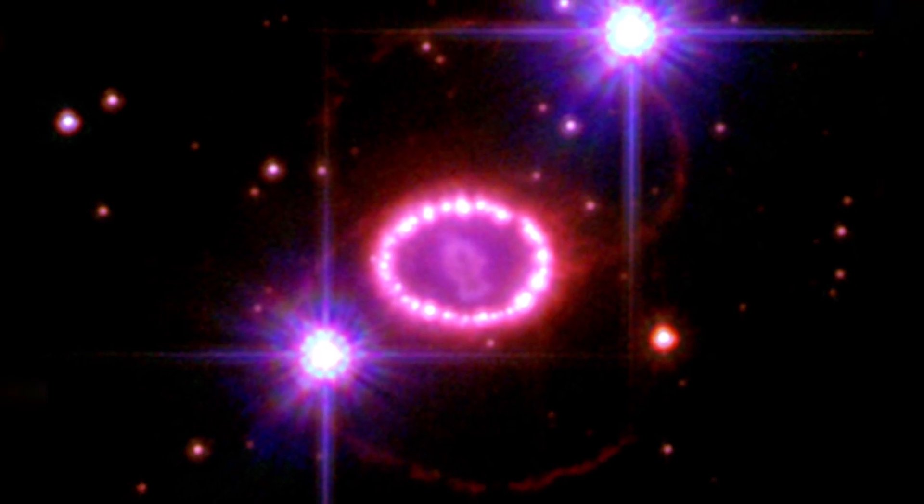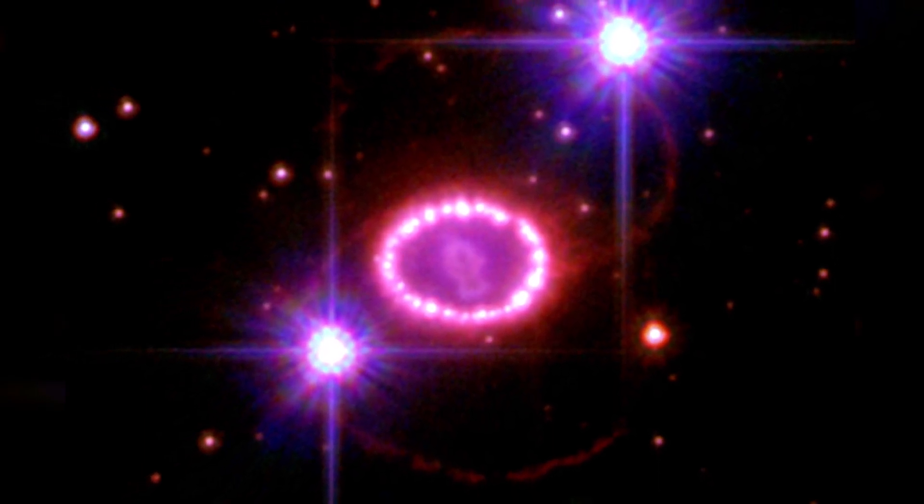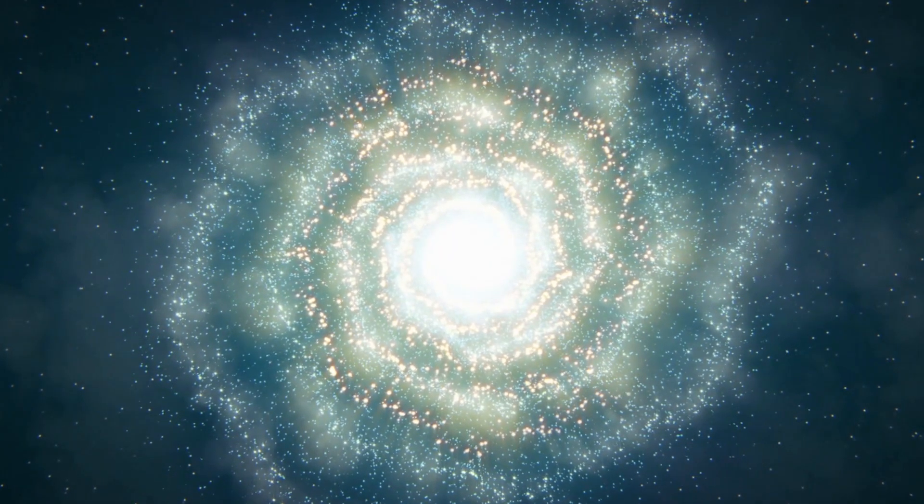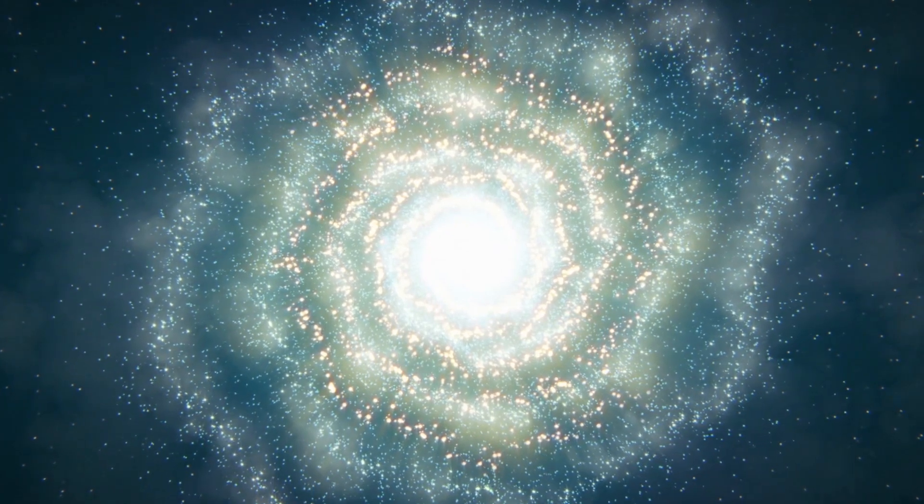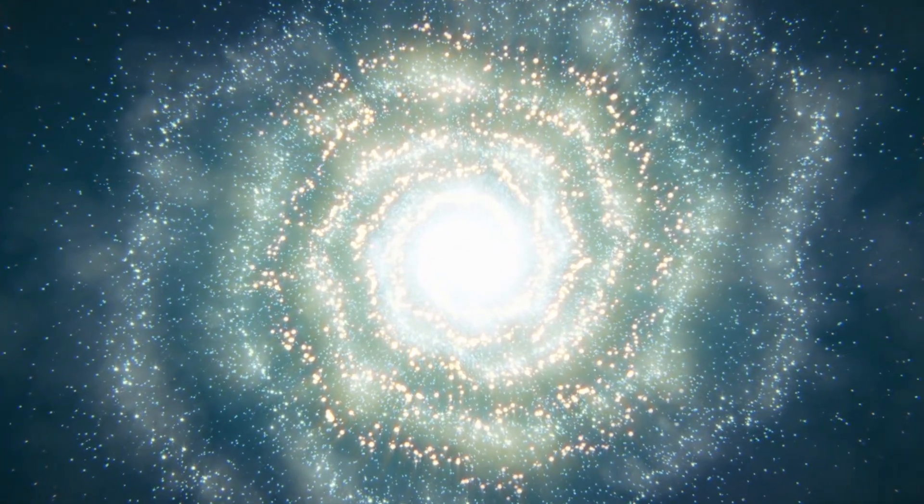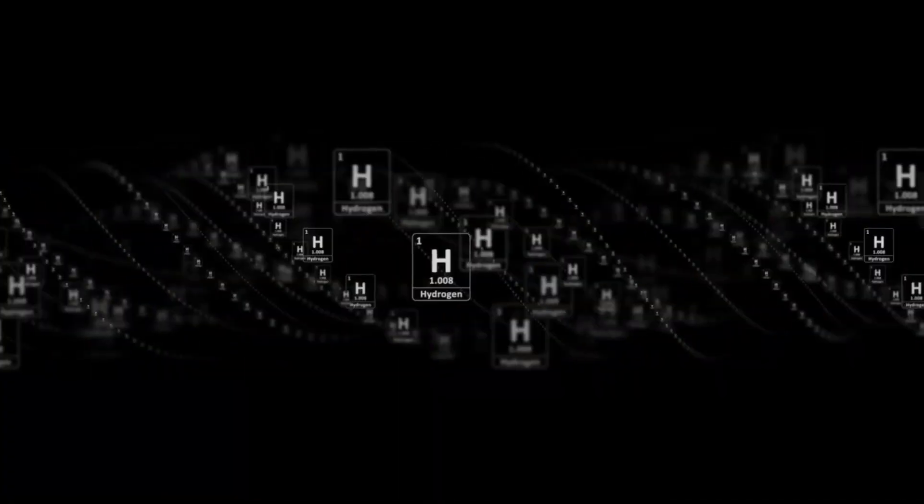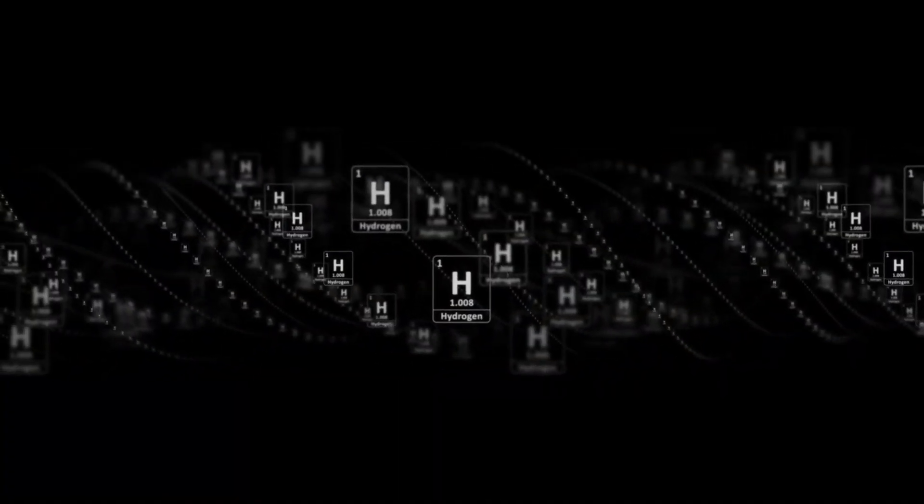Type 2 supernovae subcategories are classified based on their light curves, which describe how the intensity of the light changes over time. The light of Type 2 L supernovae declines steadily after the explosion, while the light of Type 2 P supernovae stays steady for a longer period of time before diminishing. Both types have the signature of hydrogen in their spectra.